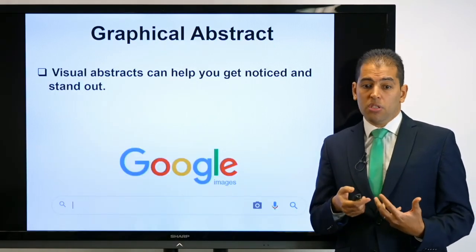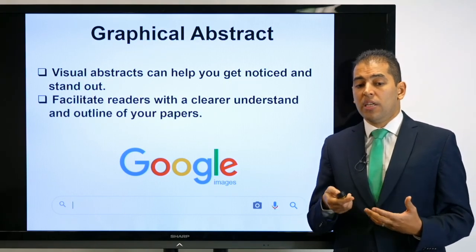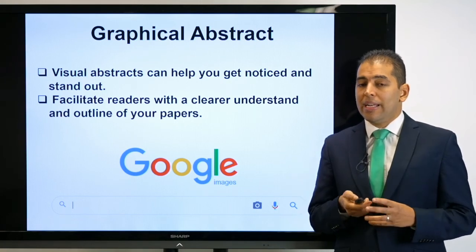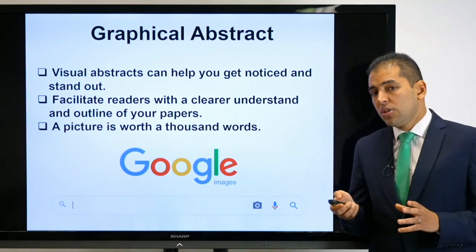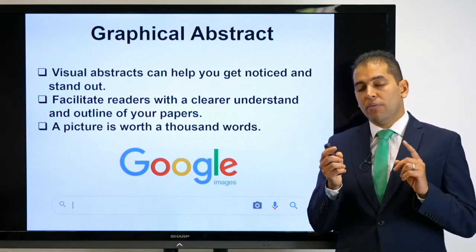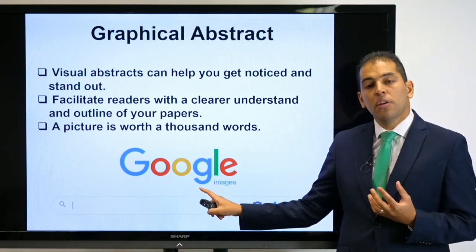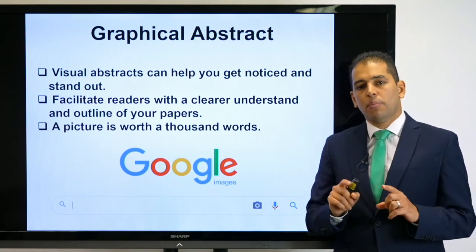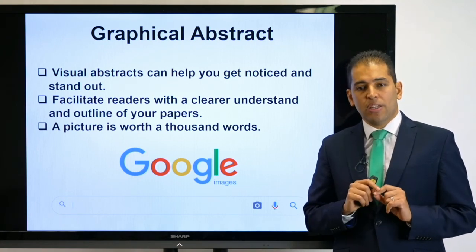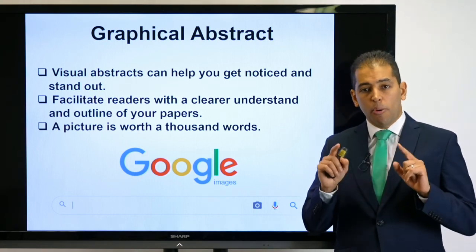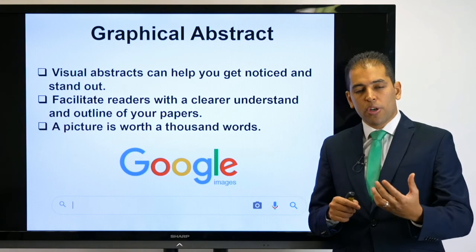Visual abstracts can help you get noticed and stand out. They facilitate readers' tasks to understand your work and they can outline your paper. As we all know, a picture is worth a thousand words. Your publication will be coupled to a very important image, which is the graphical abstract, and can be searched on an image search engine. So when somebody uses keywords relevant to your publication in an image search engine, the graphical abstract will pop up and directly link to your publication — as a consequence, your work will be read.